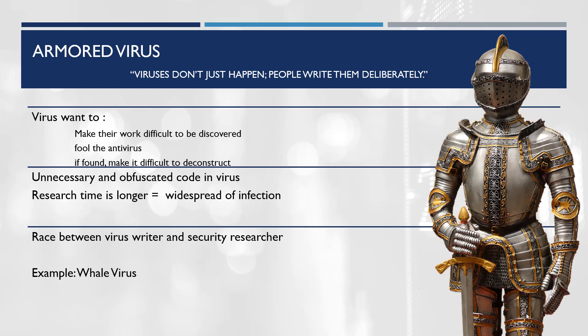Armored viruses use special tricks to make the tracing, dissembling, and understanding of the code more difficult. An example of an armored virus is the whale virus. The whale virus is designed to be very difficult to reverse engineer and analyze. It is very large in size and contains a large amount of misleading code or misleading logic, which will foil all attempts to figure out its mission.